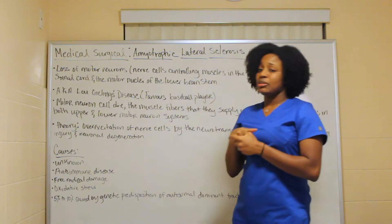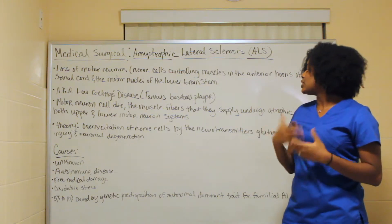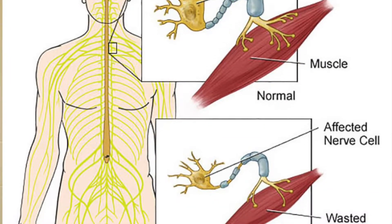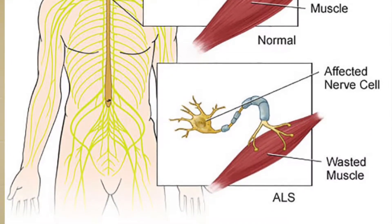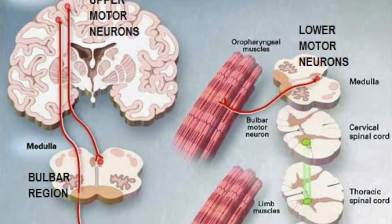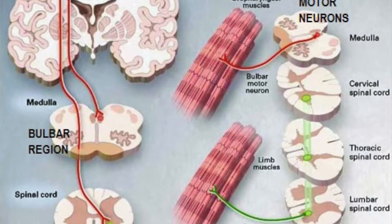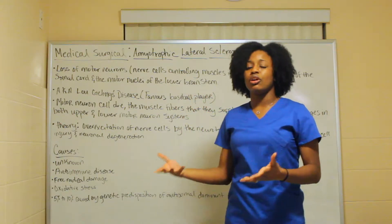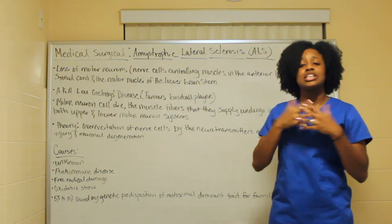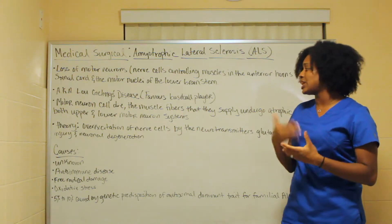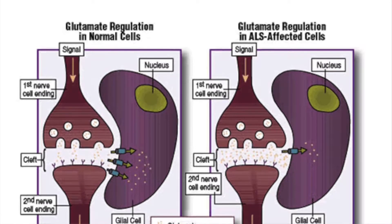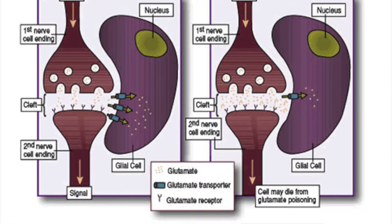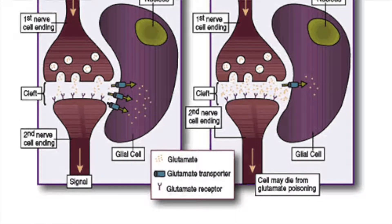The motor neuron cell dies, and with it dying, the muscle fibers that are supplied undergo atrophic changes — atrophic pretty much means a shrinkage — in both the upper and lower motor neuron system. The theory is that there is an overexcitation of nerve cells by the neurotransmitter glutamate, resulting in cell injury and neuronal degeneration.